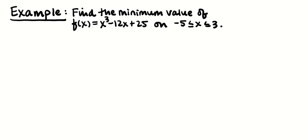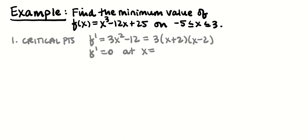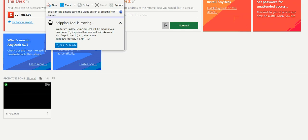For example, we're going to find the minimum value of f(x) = x³ - 12x + 25 on the closed interval -5 to 3. What we're going to do is start by finding the critical points. Step one: critical points. So we're going to need to take f'(x), and that's going to be 3x² - 12, and we need to find out whether that's equal to zero or undefined. Looks like this thing is never going to be undefined, so I can just find where it's equal to zero. That's 3(x² - 4), so that's 3(x + 2)(x - 2). f' = 0 at x = -2 and x = 2. That 3 doesn't really contribute any zeros.